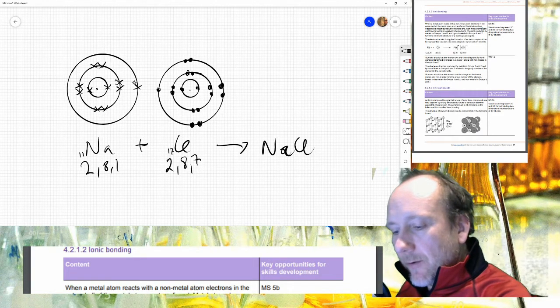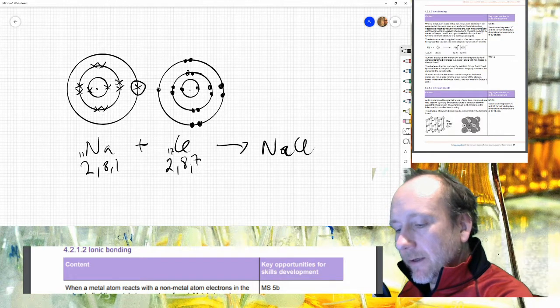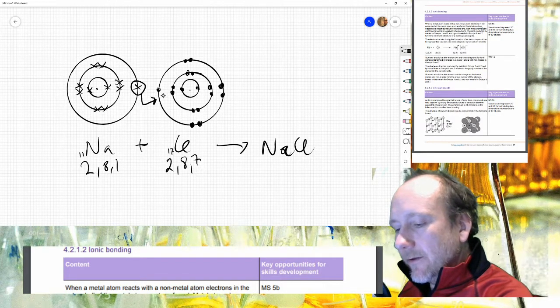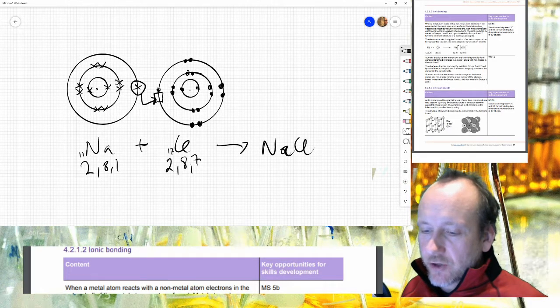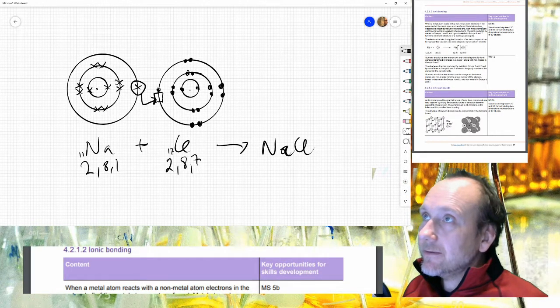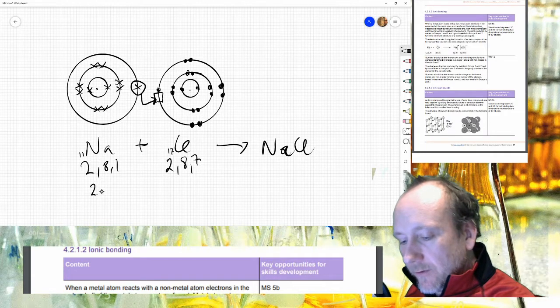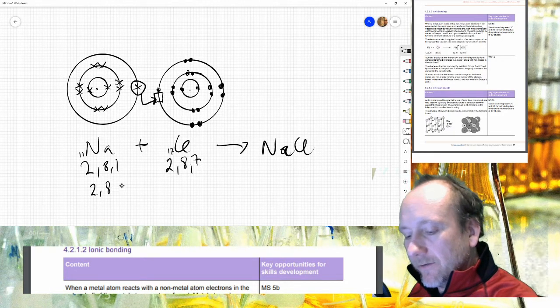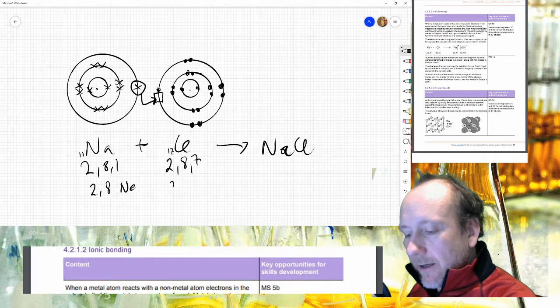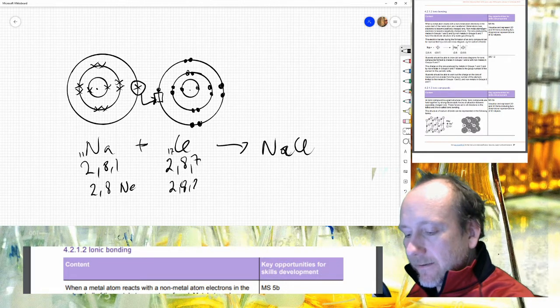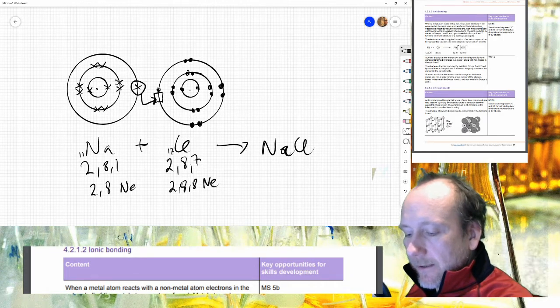So there's a reason why I drew it like this, which will become apparent in a second. The outer electron from the sodium can now occupy the space that is on the chlorine's outer shell. And if it does that, then sodium will become 2, 8, which will look exactly like neon and chlorine will become 2, 8, 8.